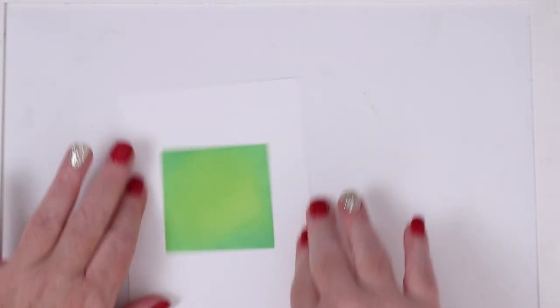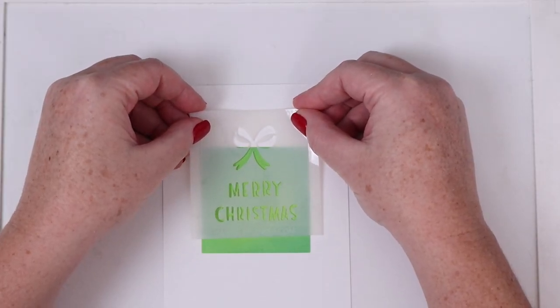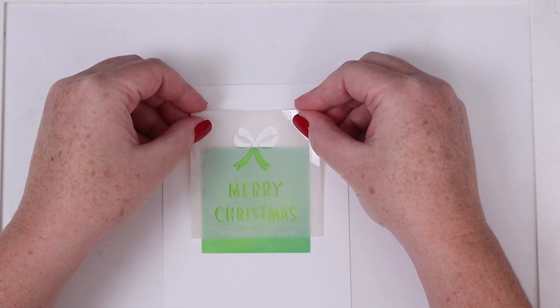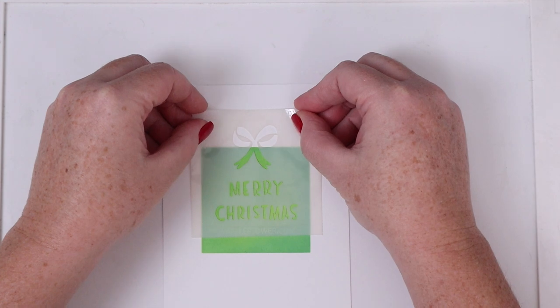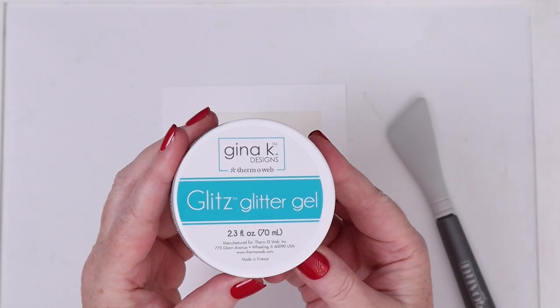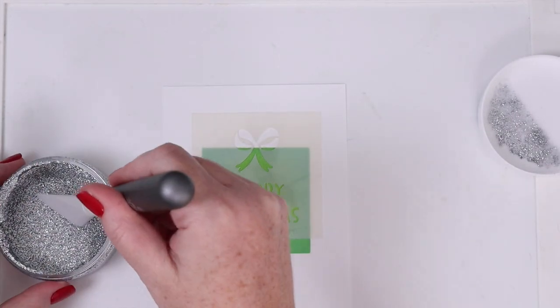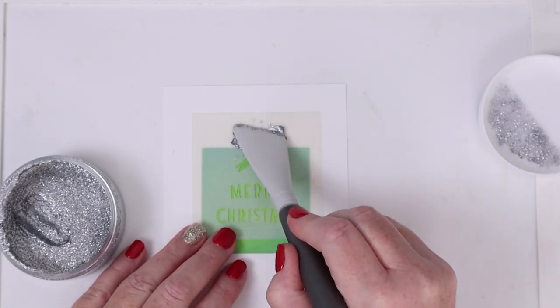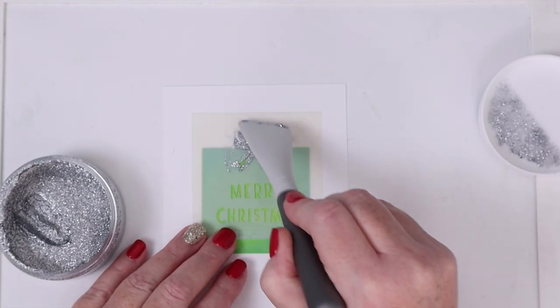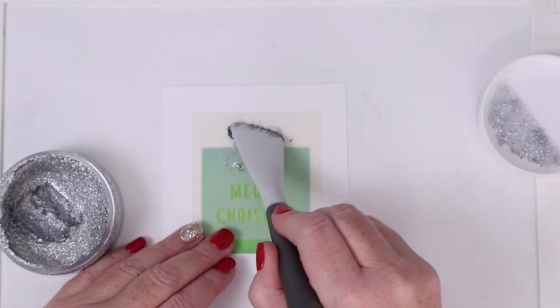This time I'm going to spray the back of the Merry Bow stencil and I'm going to line it up right on top so that it looks like it's a bow sitting on top of a present. Then I grab some Gina K for Thermoweb Glitter Glitz Gel in silver. I am not a fan of loose glitter, but this gel looks like you used loose glitter without any of the crazy mess.